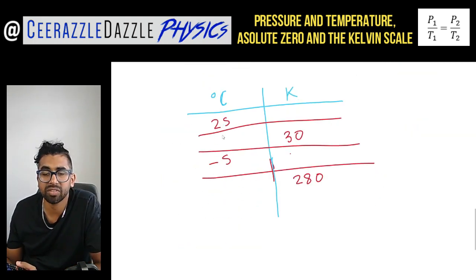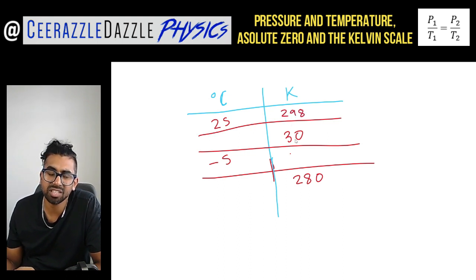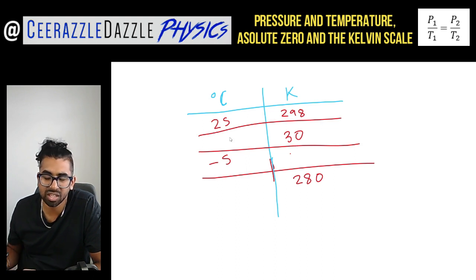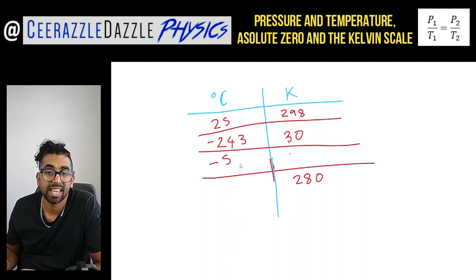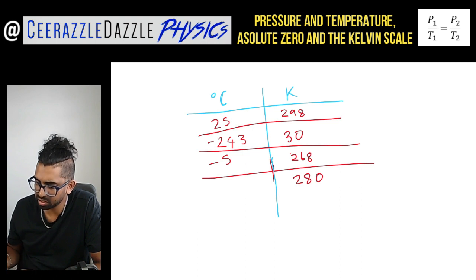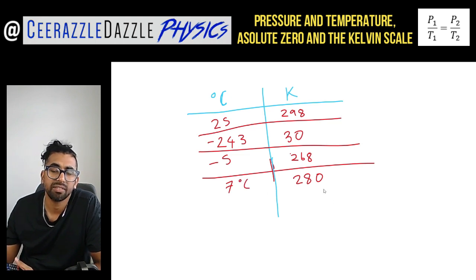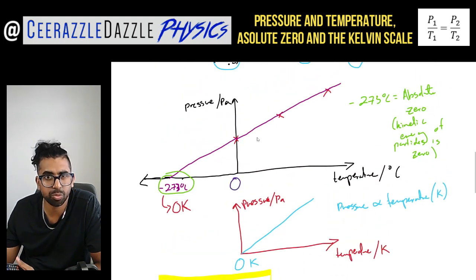Let's do some practice calculations using a table of degrees Celsius to Kelvin conversions. 25 degrees Celsius plus 273 gives 298 K. 30 Kelvin minus 273 gives minus 243 degrees Celsius. Minus 5 degrees Celsius plus 273 gives 268 K. And 280 K minus 273 gives 7 degrees Celsius, so 7 degrees Celsius equals 280 Kelvin.